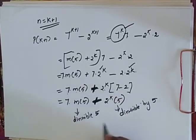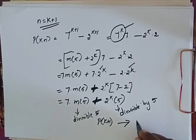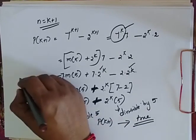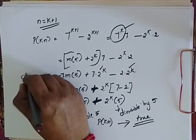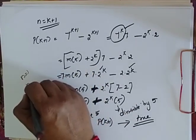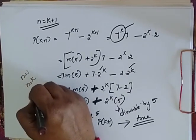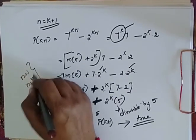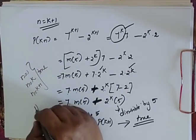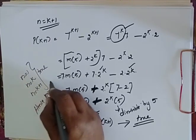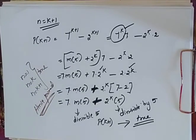So now I have proved that for n equal to 1 it is true, for n equal to k it is true, and for n equal to k+1 it is true. Hence this is true for all values greater than 0.